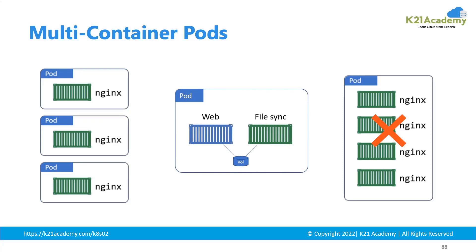Rather, we would have two different sorts of containers — like one is an Nginx container, and another is a container which is helping us populate the Nginx web server's static web page. One is writing to the volume, the Nginx web server is reading from the volume and showcasing that entire data as the web server's web page. So when we say multiple containers in the same pod, they are not the same containers — they are entirely different applications which are bound to sit together, and if we don't keep them together, they would not work properly.